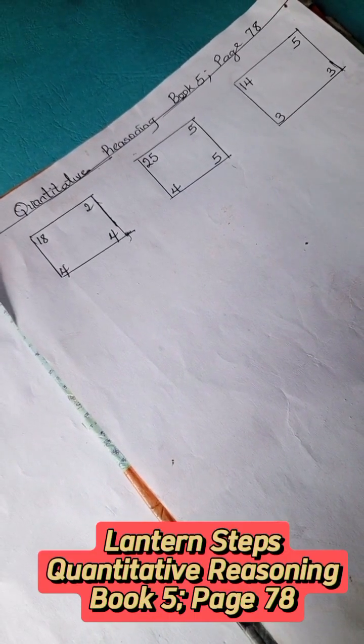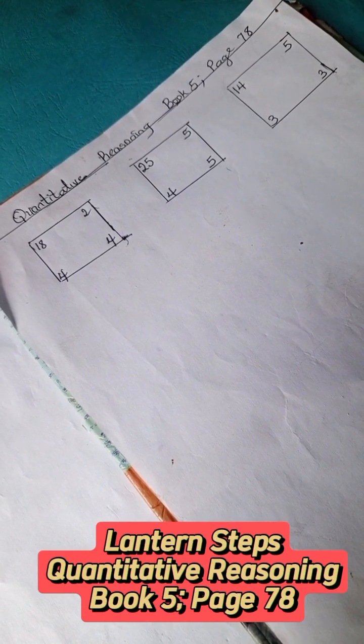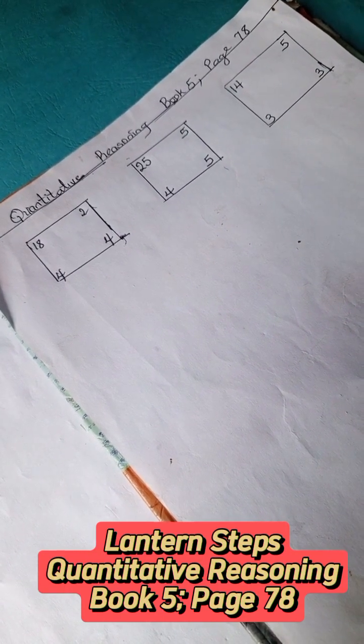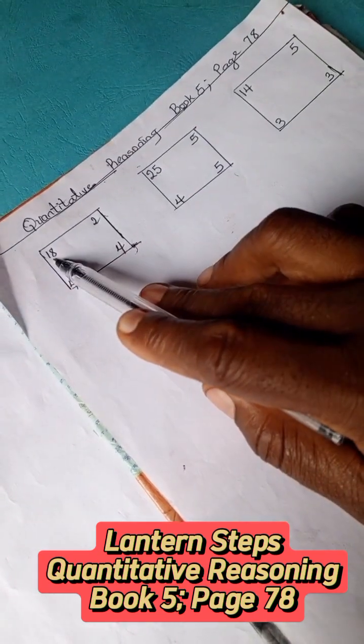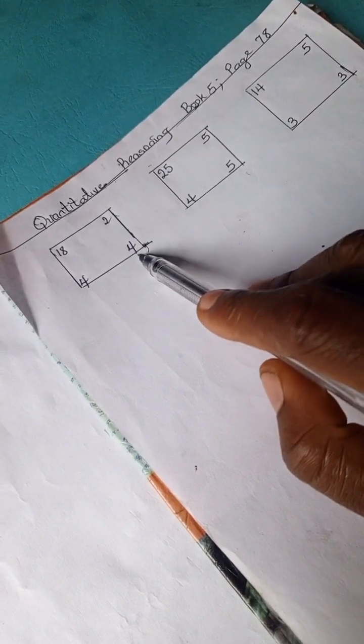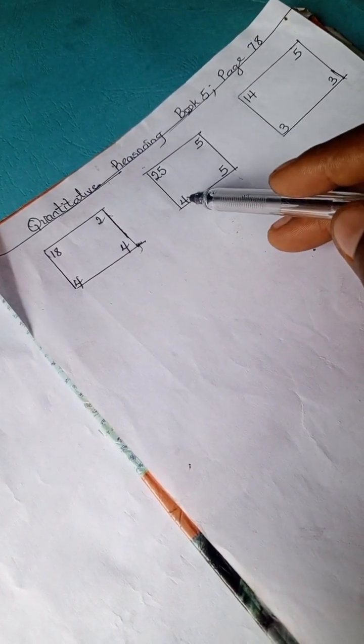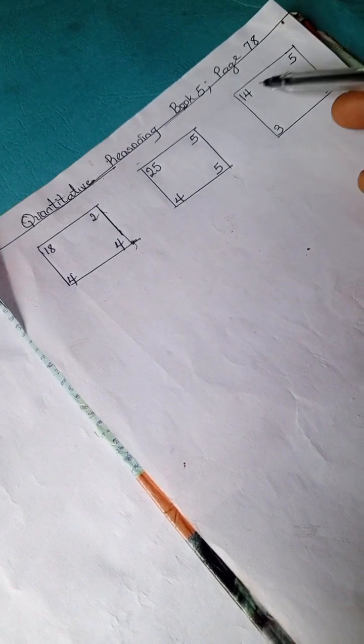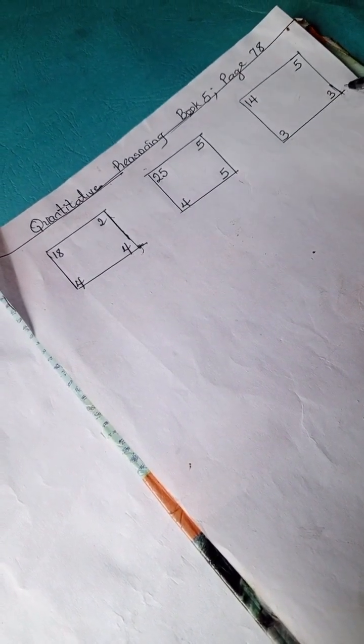Welcome to Quantitative Reasoning solution section. We have Lantern Step Quantitative Reasoning Book 5, Page 78. In this problem we have 18, 2, 4, 4. Here we have 25, 5, 4, 5. In this example we have 14, 5, 3, and 3.